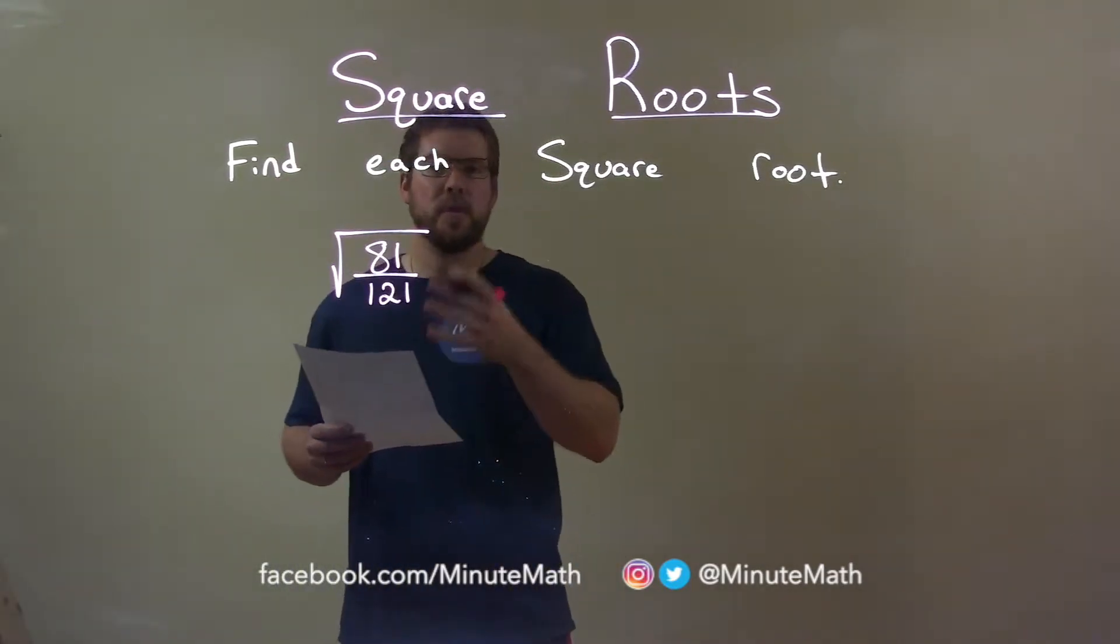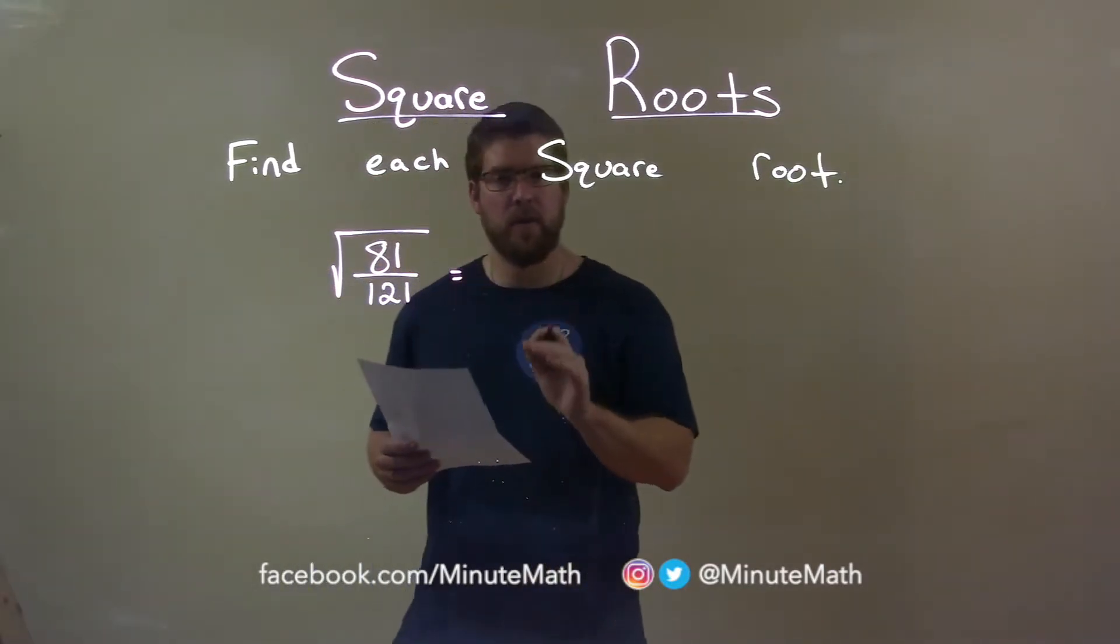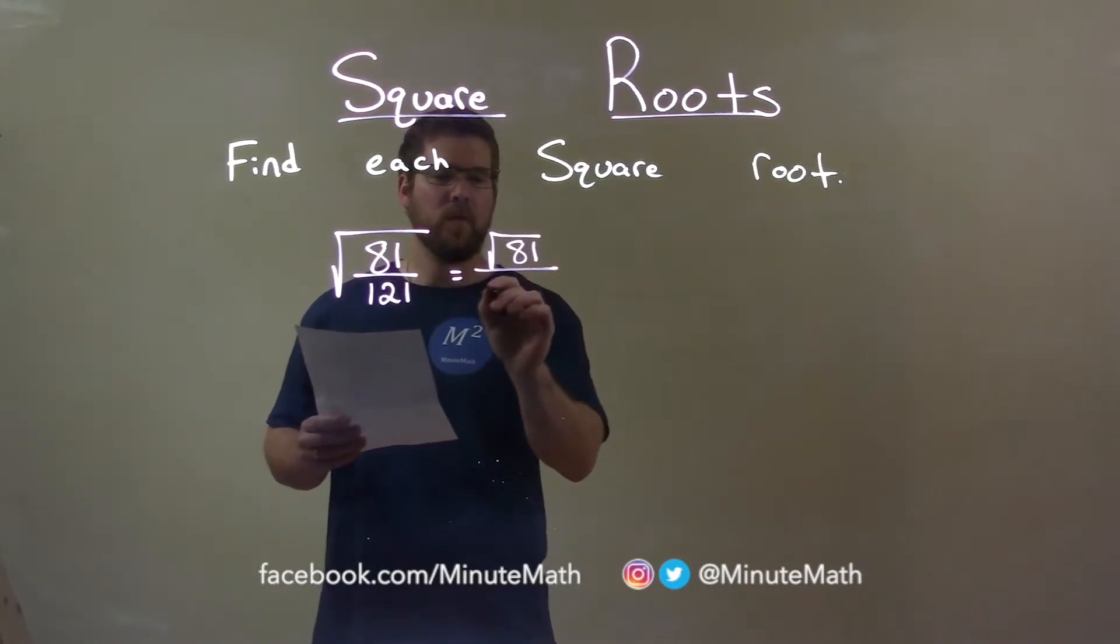When we take square roots of a fraction, we can take the square root of the numerator and denominator individually. So this becomes the square root of 81 over the square root of 121.